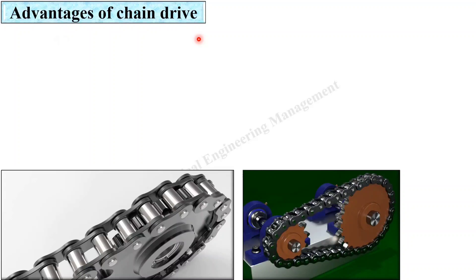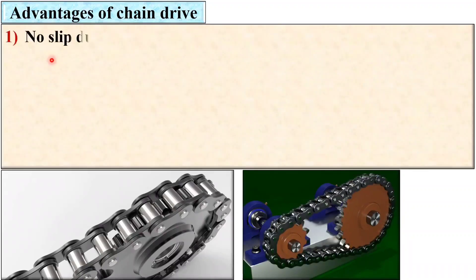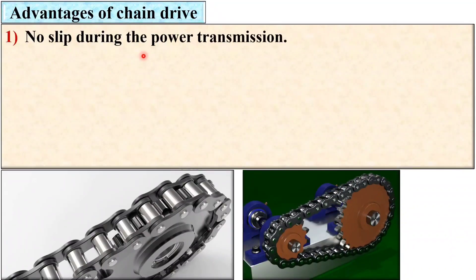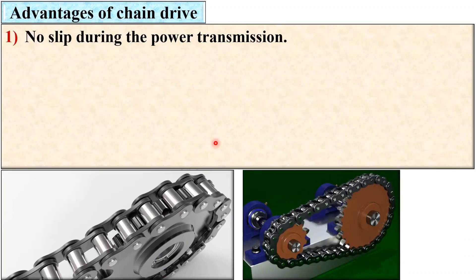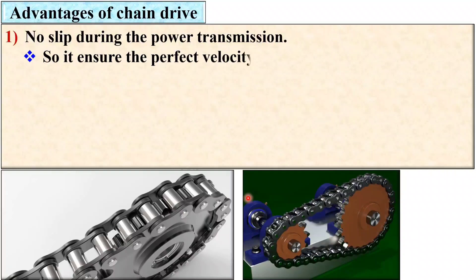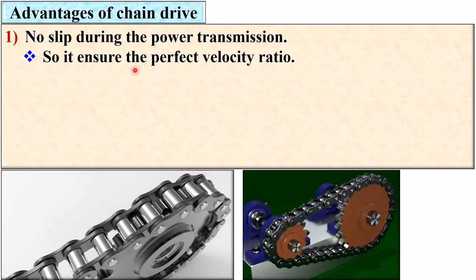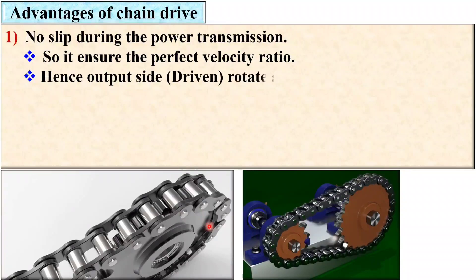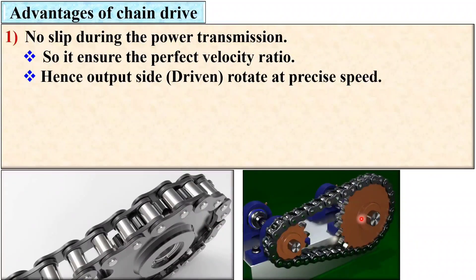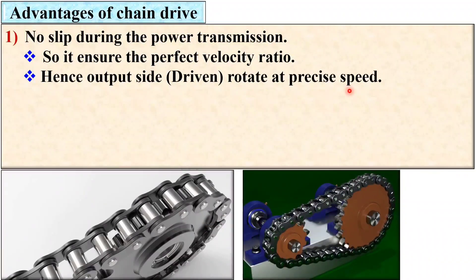Next, advantages of the chain drive. First, no slip during the power transmission. This is a very important advantage if you compare it with the belt drive. It ensures the perfect velocity ratio because if there is no slip, then you will get the perfect velocity ratio. Hence, on the output side, that means on the driven side, you will get the precise speed.